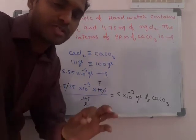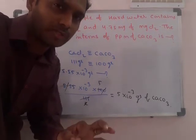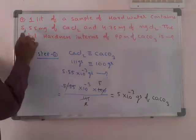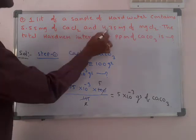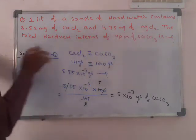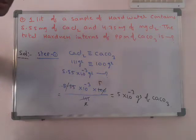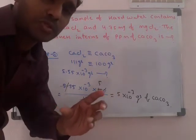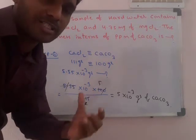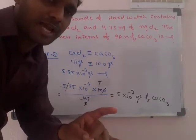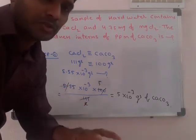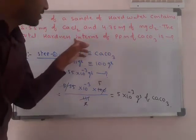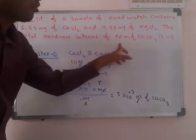Hello students, today we see some more problems based on hardness of water. The first problem: one liter of a sample of hard water contains 5.55 milligrams of calcium chloride and 4.75 milligrams of magnesium chloride. We need to find the total hardness in terms of ppm of CaCO₃. Chlorides and sulfates of calcium and magnesium are responsible for permanent hardness — so this is permanent hardness.